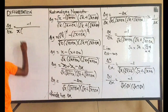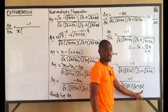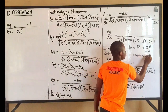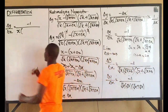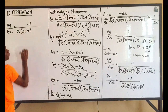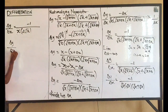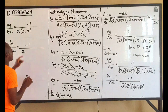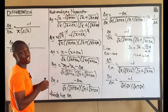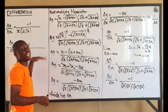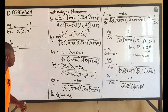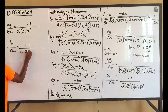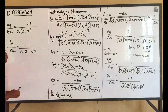For the bracket part: root x plus root x is 2 root x, since a plus a equals 2a. So dy/dx equals minus 1 over x times 2 root x. That gives minus 1 over 2x root x. But we need to write it properly — number before the variable.